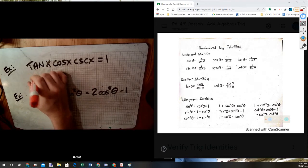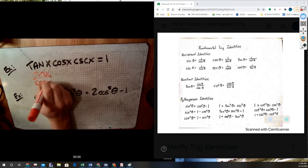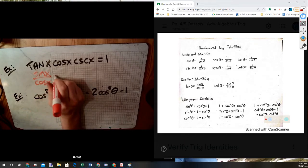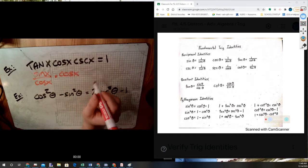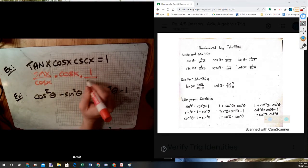So tangent, for example, is equal to sine over cosine. Cosine itself, well, that's just already cosine, so that's fine. And cosecant is one over sine.